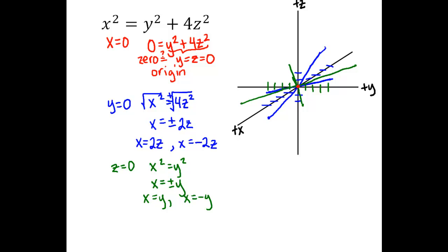After you've done a few of these problems, you'll start to recognize this pattern. This is a typical kind of graph for a cone. It's maybe not evident right away, but once we do another cross-section or two for some x values, we should be able to understand why it's the equation of a cone.